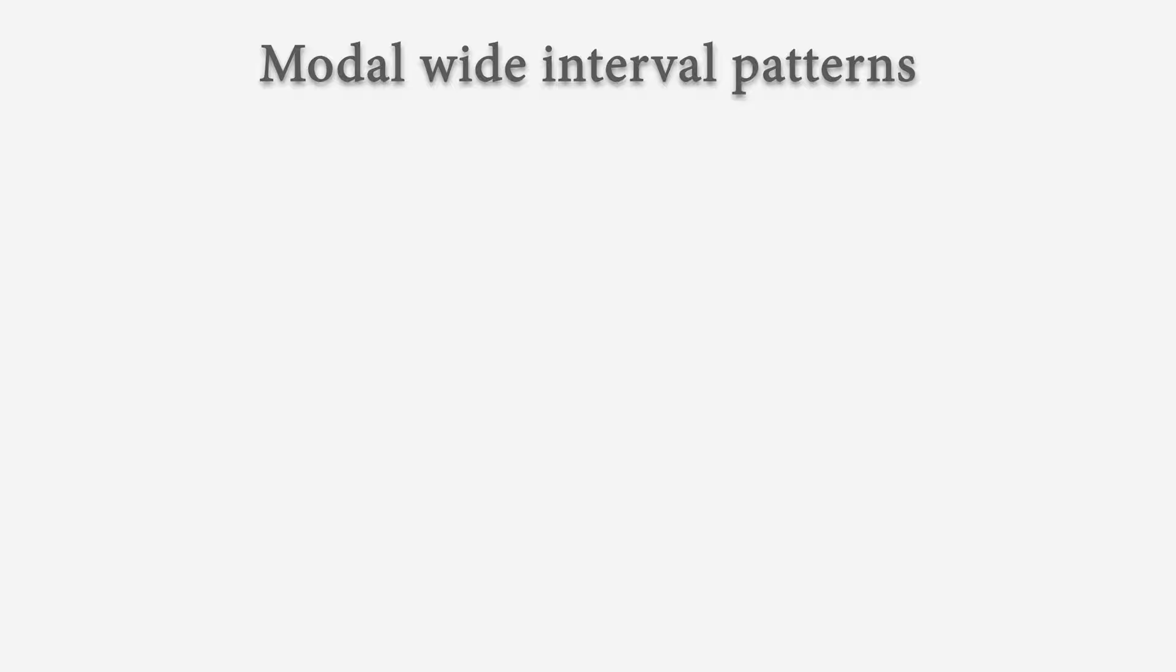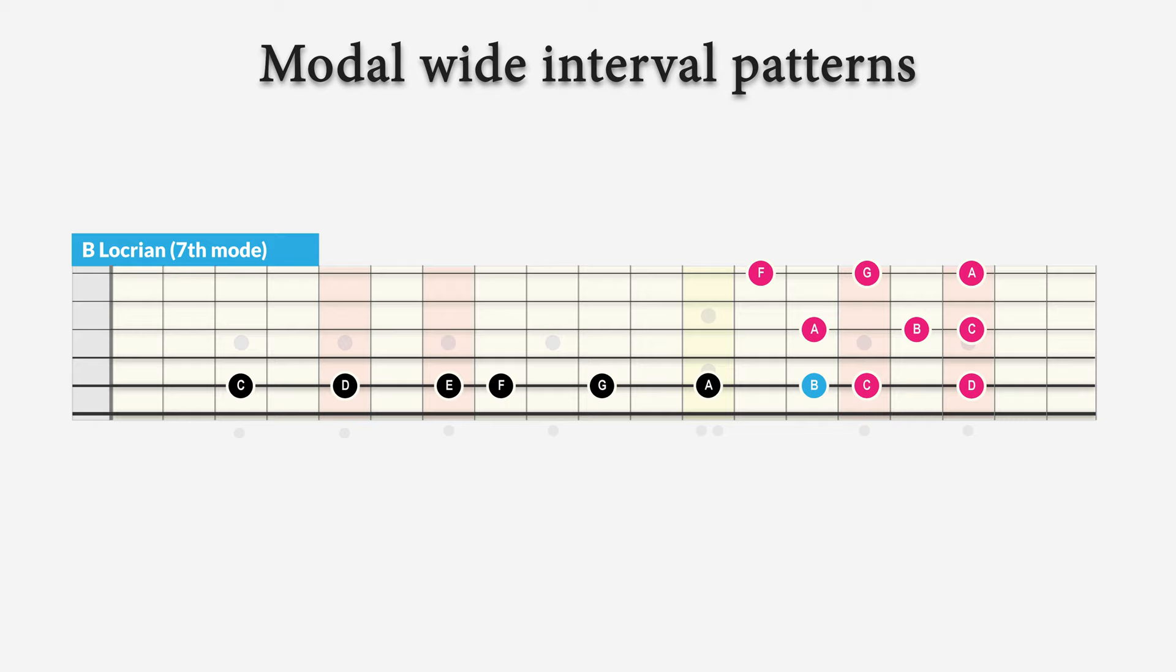Now the last mode starts on the seventh note of the major scale. And this seventh note of C major is B Locrian. It's a B minor scale with a minor second and diminished fifth degree. And we play this over a B minor 7 flat 5 chord.